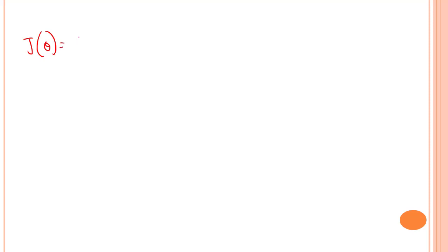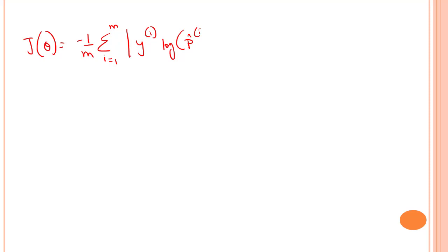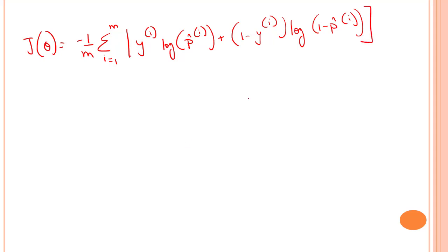Our cost function, let's denote it as J(θ). It is (1/m) times the summation from i equals 1 to m of: y(i) log(p̂(i)) plus (1 minus y(i)) log(1 minus p̂(i)). This is known as log loss.